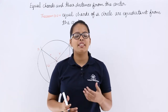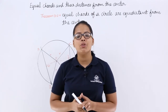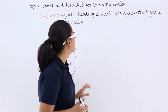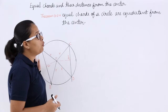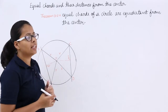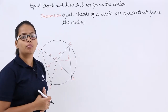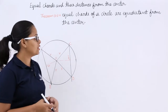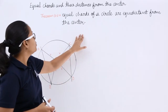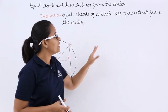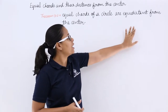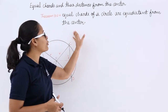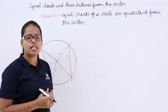Hello guys, let's discuss this theorem. This theorem is about equal chords and their distance from the centers. This theorem says equal chords of a circle are equidistant from the center.